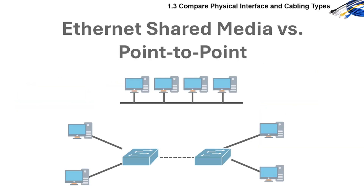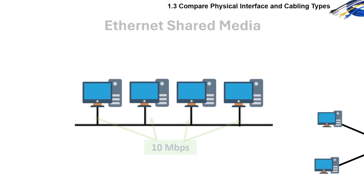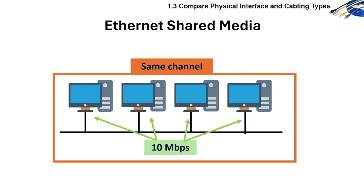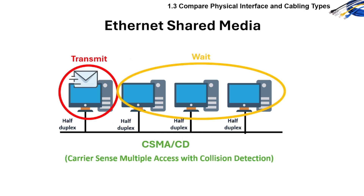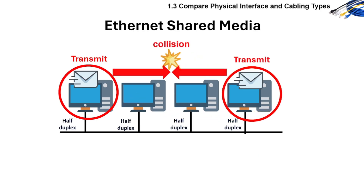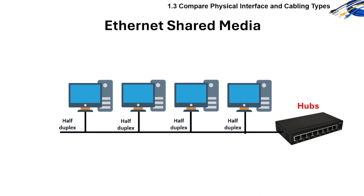Let's now move on to Ethernet shared media versus point-to-point. In a shared media network, all devices use the same bandwidth and all devices listen to the same broadcast domain, channel, or layer 2. Only one device can transmit at a time — if one device transmits, others must wait, because everyone is talking and listening on the same wire. If two talk at once, there's a collision. It is used by old-school hubs, and it's outdated because it's slow and collisions are everywhere.